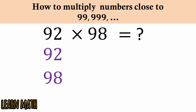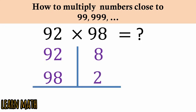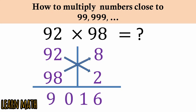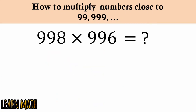The next example is 92 multiplied by 98: write 92 and 98, then 100 minus 92 is 8, 100 minus 98 is 2. Multiply 2 with 8 to get 16. Then 92 minus 2 or 98 minus 8 in both cases is 90 — so 9016 is the answer.